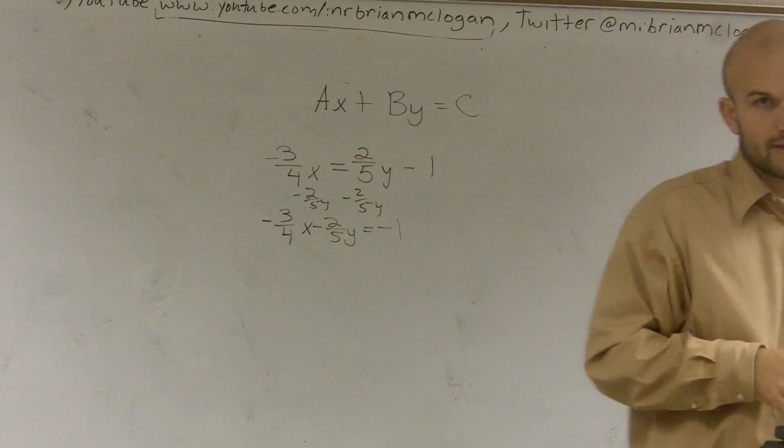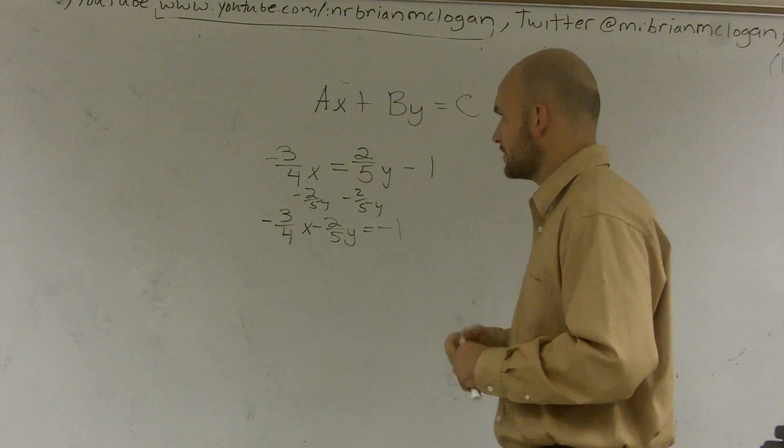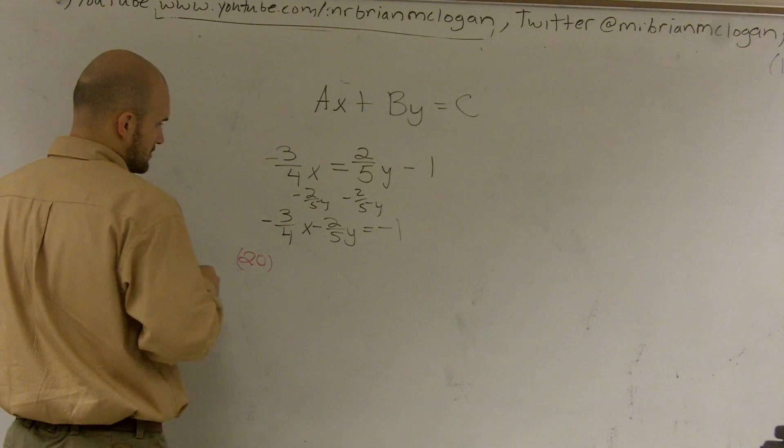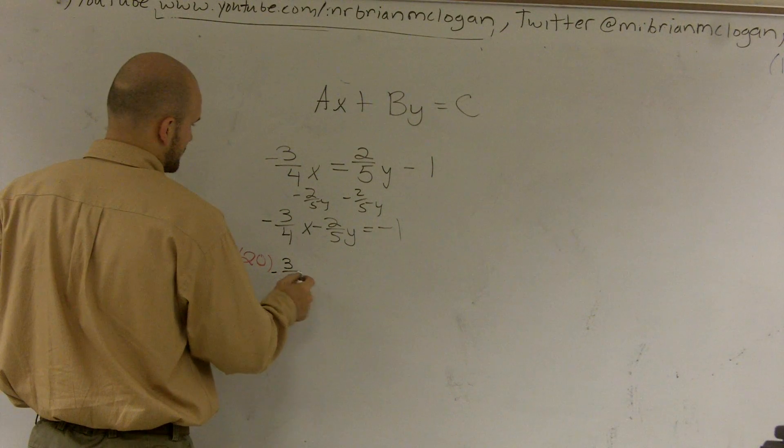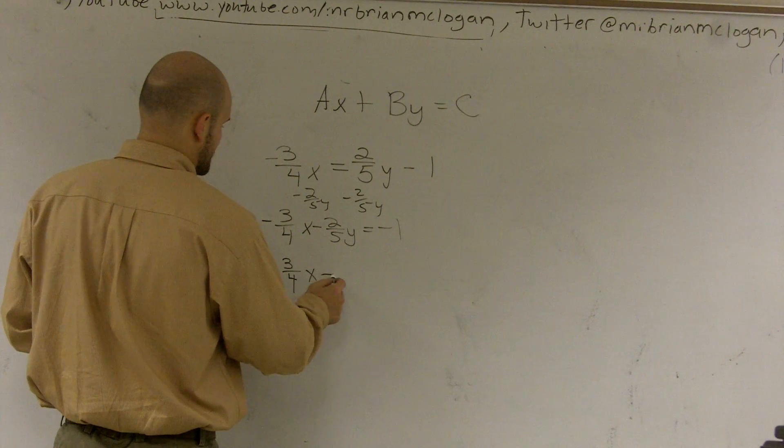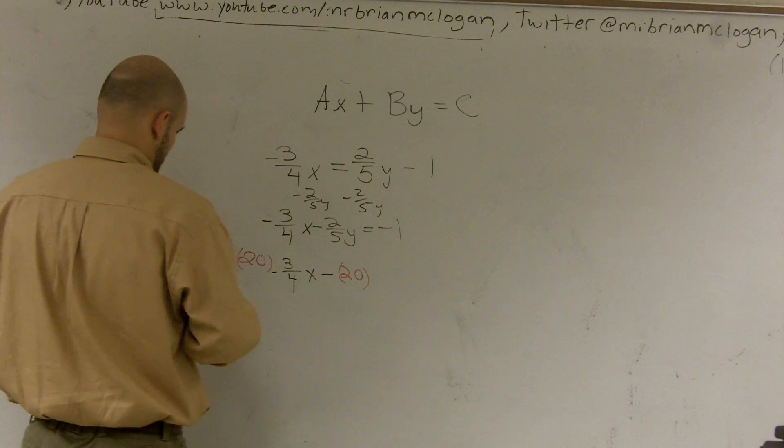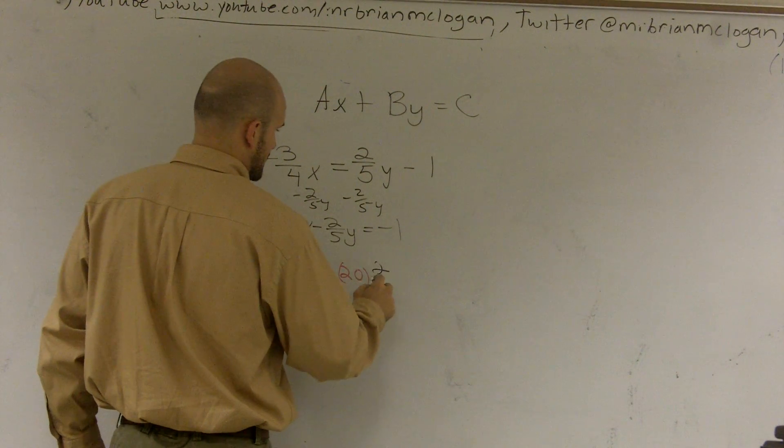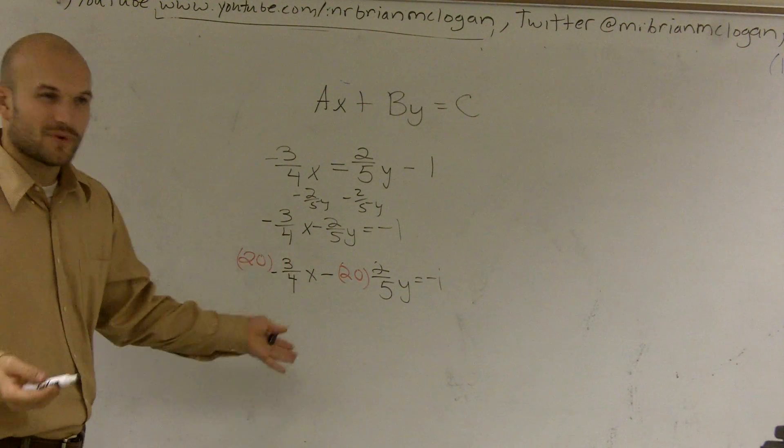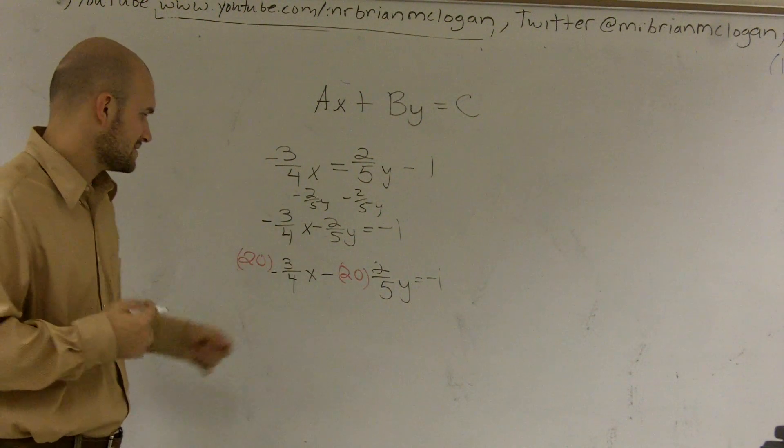Now what we need to do is I need to multiply everything by 20. So what I'm going to do is I'm going to multiply 20 times a negative 3 fourths x and then minus 20 again times 2 fifths y equals negative 1. Now you could multiply by negative 20 if you want to get rid of that negative sign. But I'm not really concerned about it right now. I'll do that right at the end. But that would be kind of a helpful tip to do.